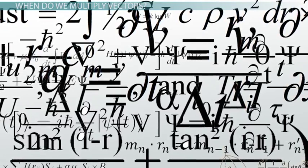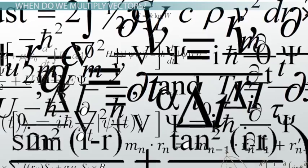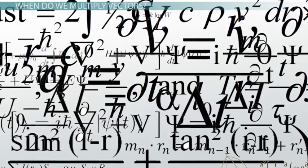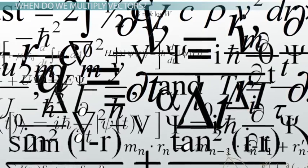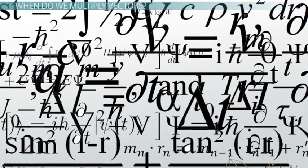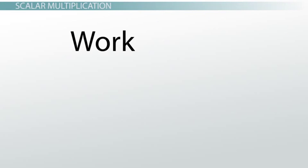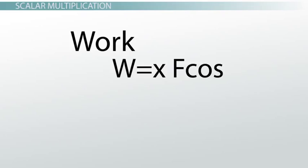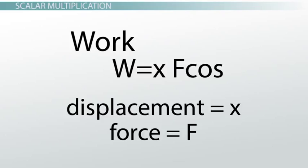Which one do you do? That depends on the exact situation. Some equations call for a dot product, while others call for a cross product. Generally, if the answer you're looking for is a scalar quantity, it will be a scalar product. But if the answer is a vector quantity, it will be a vector product. Work is probably the simplest example: work is equal to displacement multiplied by force — how far an object moves multiplied by the force applied to make it move.